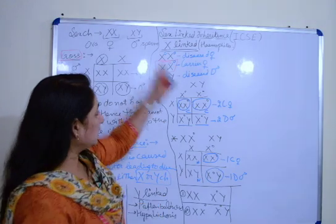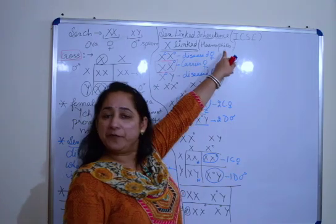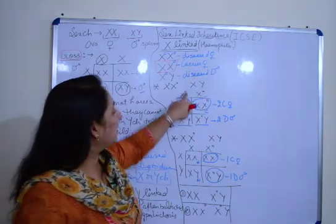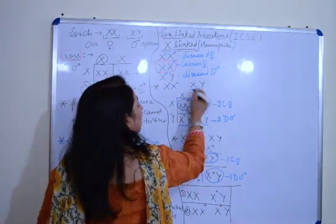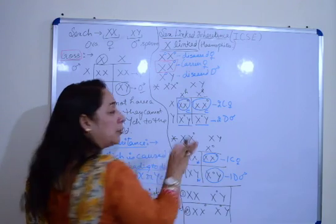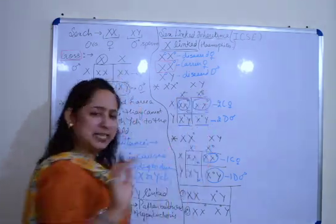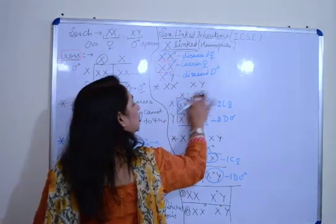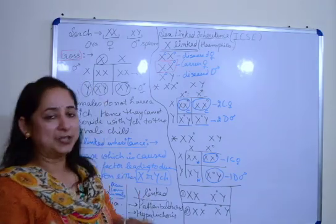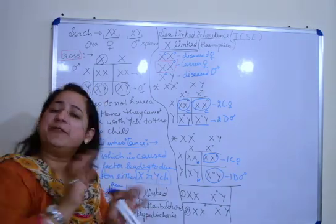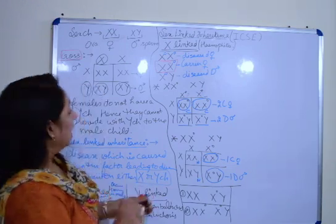This was all about X-linked inheritance. For hemophilia they can also give you color blindness. I have written a zero here as a general factor marker — in many books it may not be written this way. If they are talking about hemophilia, use 'h'; if color blindness, use 'c'. Even if you don't want to write h or c, you can mark it with a zero, which represents the factor.